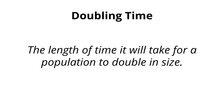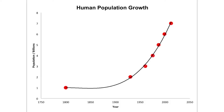Doubling time is the length of time it takes for a population to double. For example, here you have the growth of human population over time, and as you can tell, the doubling time got really short in these last few decades of the 20th century.